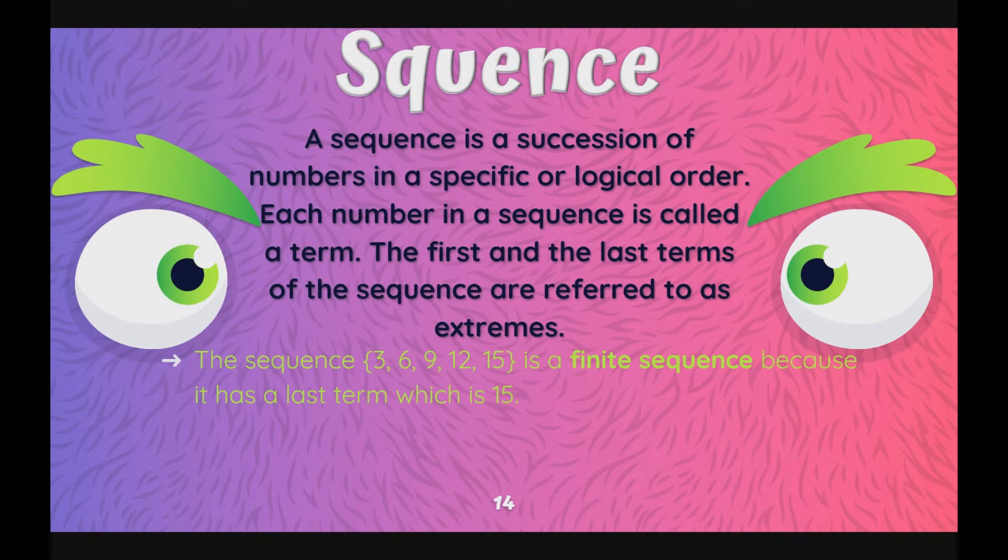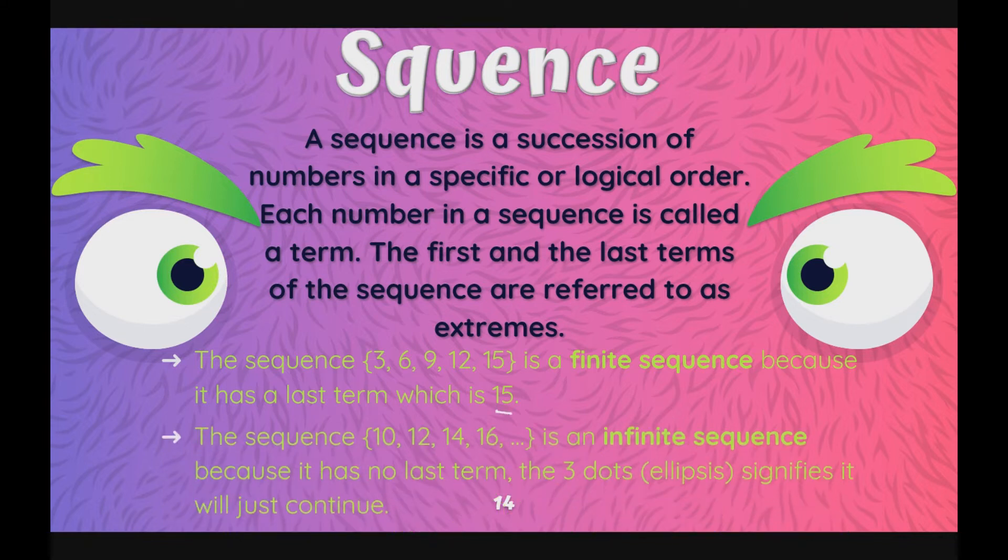In our sequence here, 3, 6, 9, 12, and 15, this is an example of a finite sequence because it has a last term which is 15.